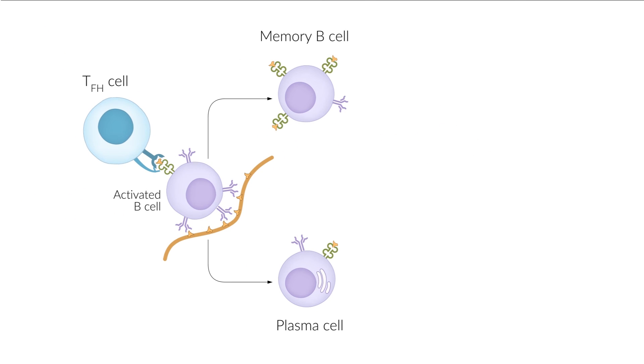As a result, memory and plasma cells are formed. Both memory B and T cells are responsible for a rapid immune response to reinfection.